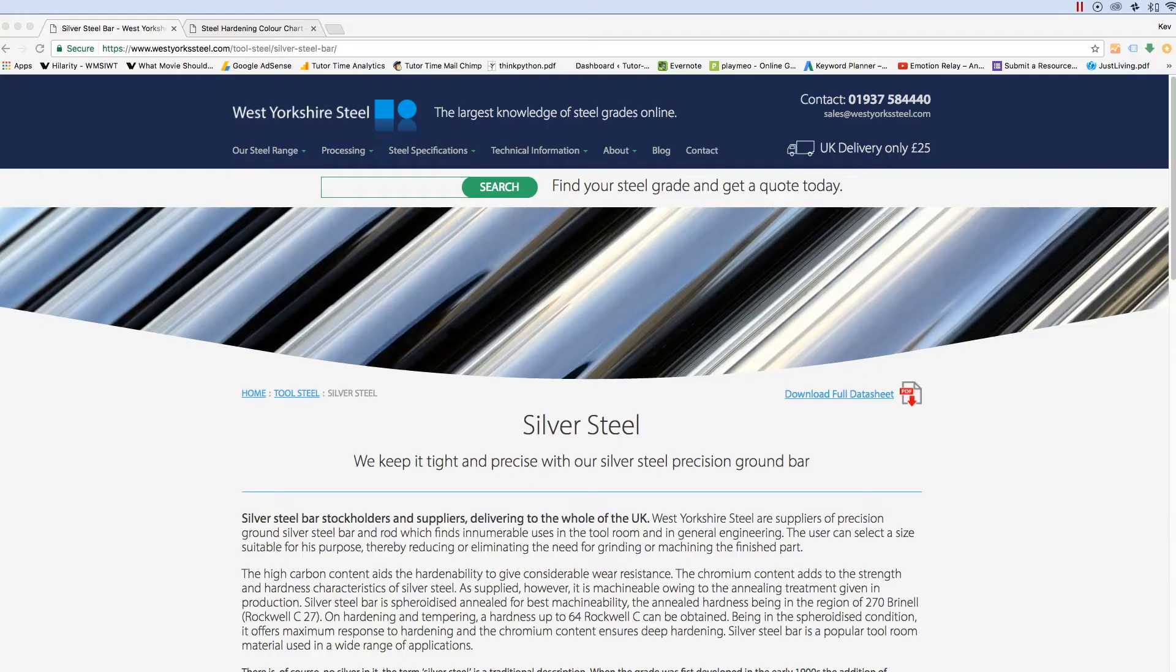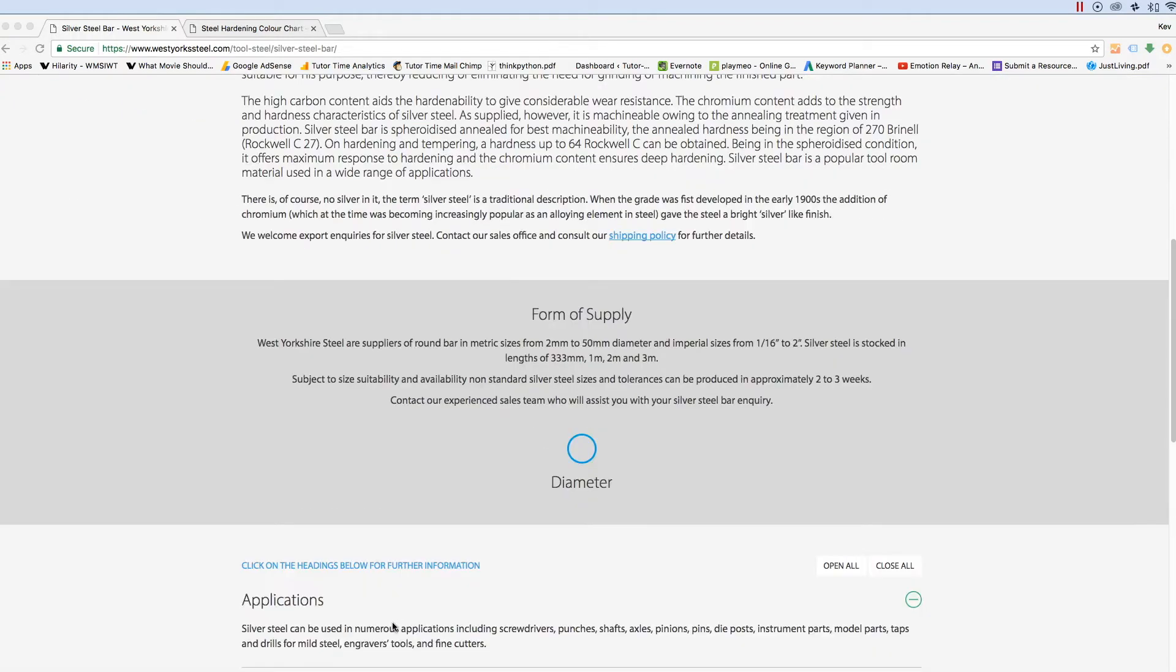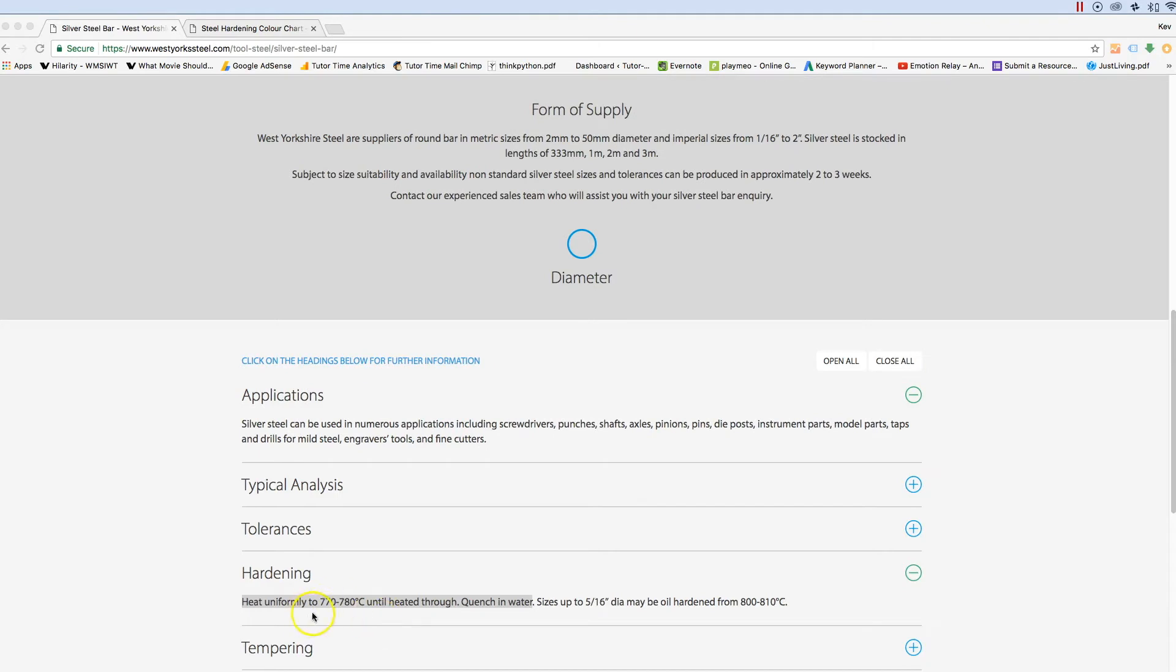A quick Google search has shown that silver steel has a high carbon content and is ideal for hardenable applications. In addition to its extremely tight tolerances, which is perfect for limits and fits, by heating it up to the right temperature we can get it extremely hard.